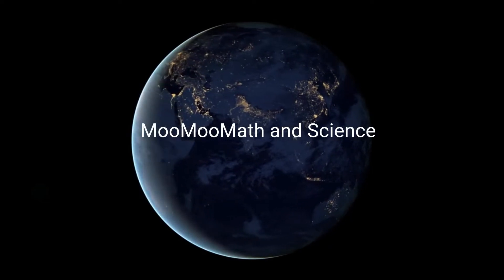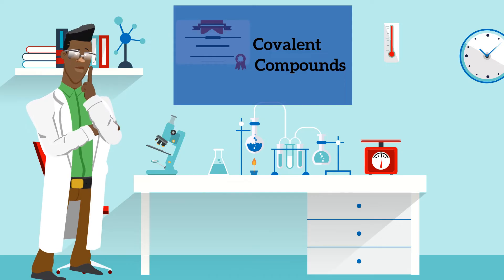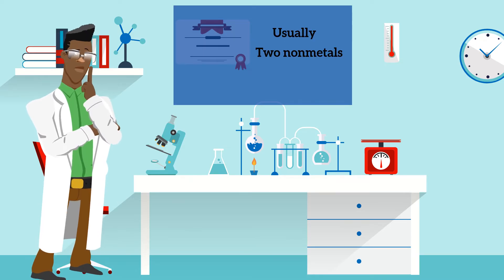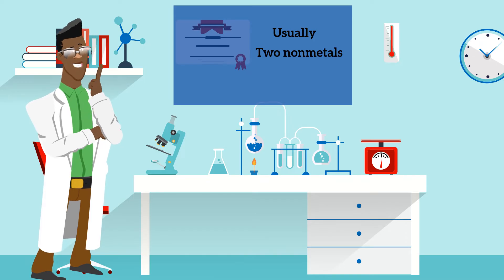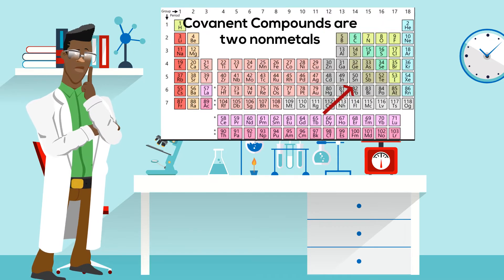Welcome to MoomooMath and Science. In this video, I'd like to talk about writing covalent compound formulas. Covalent compounds are composed of two non-metals. You can find the non-metals on the right side of the periodic table.